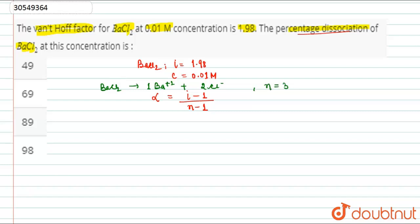Let's put in the values. i is 1.98 minus 1 over 3 minus 1. So 0.98 over 2. This will be equal to 0.49.